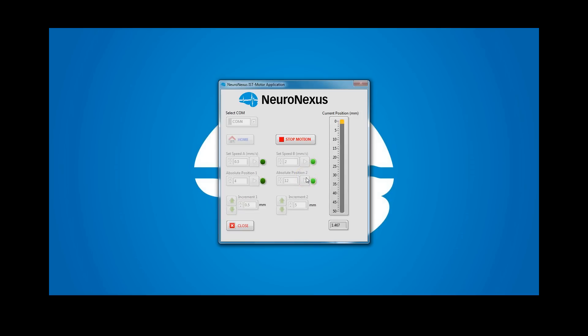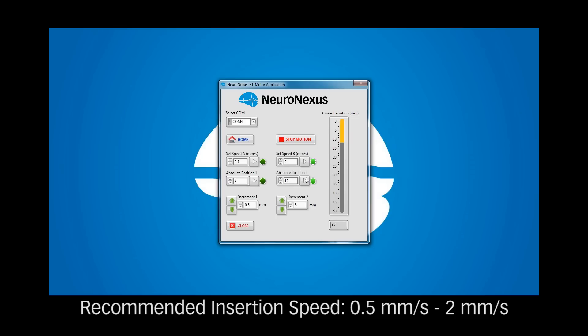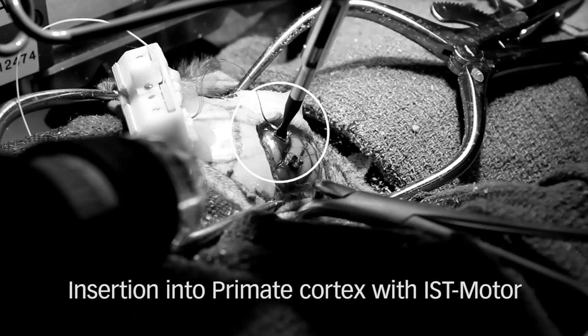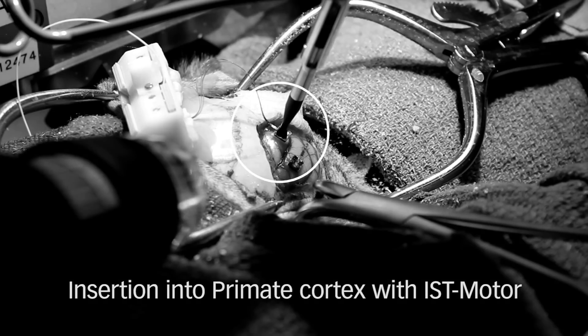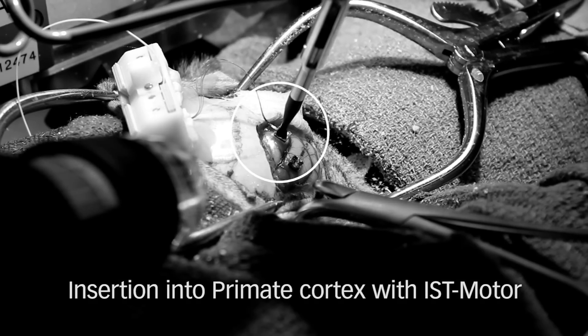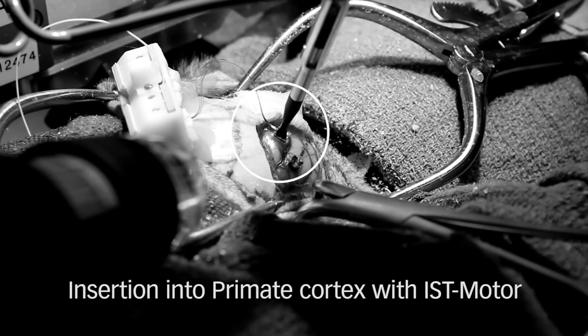To begin insertion, open the IST motor app on your computer and set the insertion depth and speed. Alternatively, the Matrix Array can be inserted in steps. To minimize trauma to neural tissue, NeuroNexus recommends insertion at 0.5 to 2 mm per second.